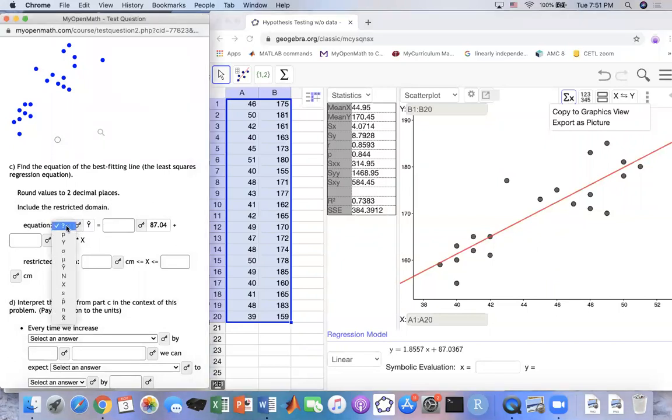It's not the real one, so we're going to have y hat instead of y. The equation is right here for you. 87 point something, this would be your y-intercept. And this one would be your slope. If you round it, 1.86.